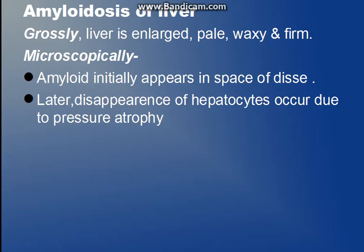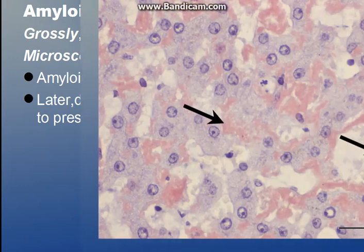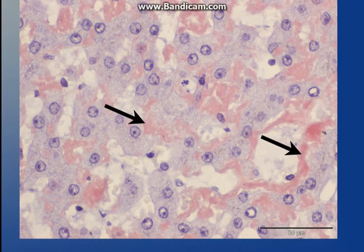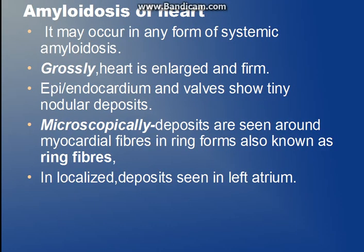Now going to amyloidosis of the liver. Grossly, every organ will be large, pale, waxy, and firm. In the liver, amyloid initially deposits in the space of Disse, which is the space between the hepatocytes and the endothelial cells. When a large amount of amyloid is deposited, pressure atrophy occurs and there can be disappearance of hepatocytes. The picture shows hepatocytes with a pink amyloid deposit.